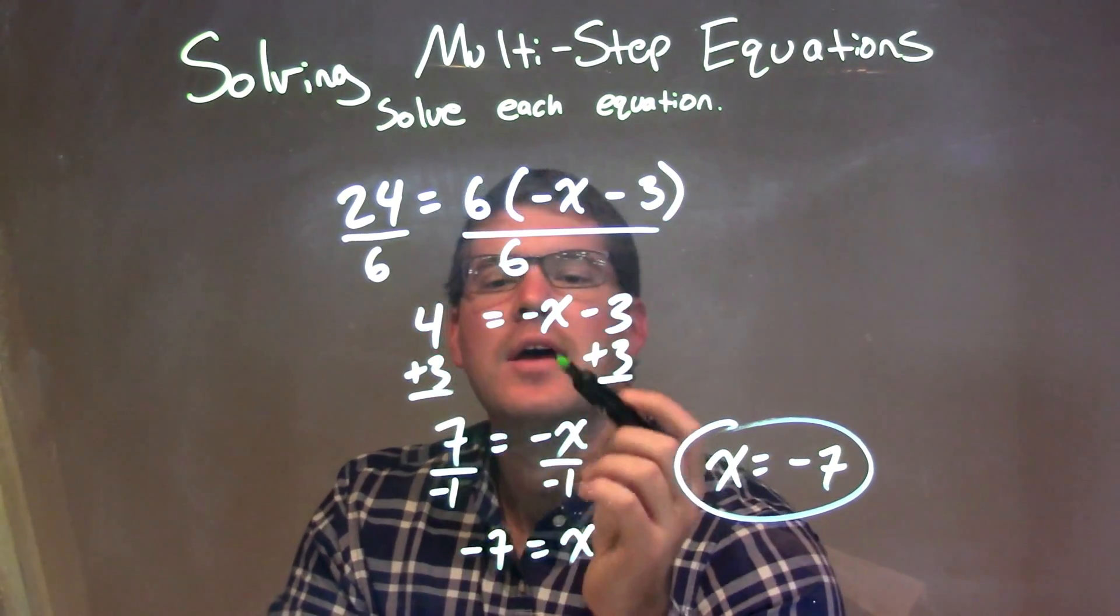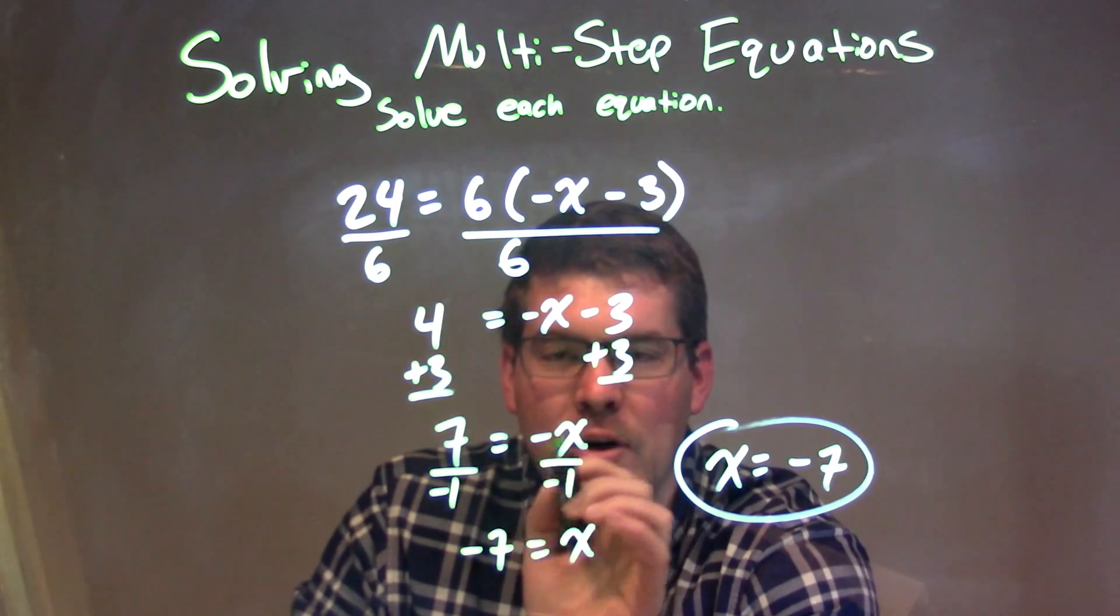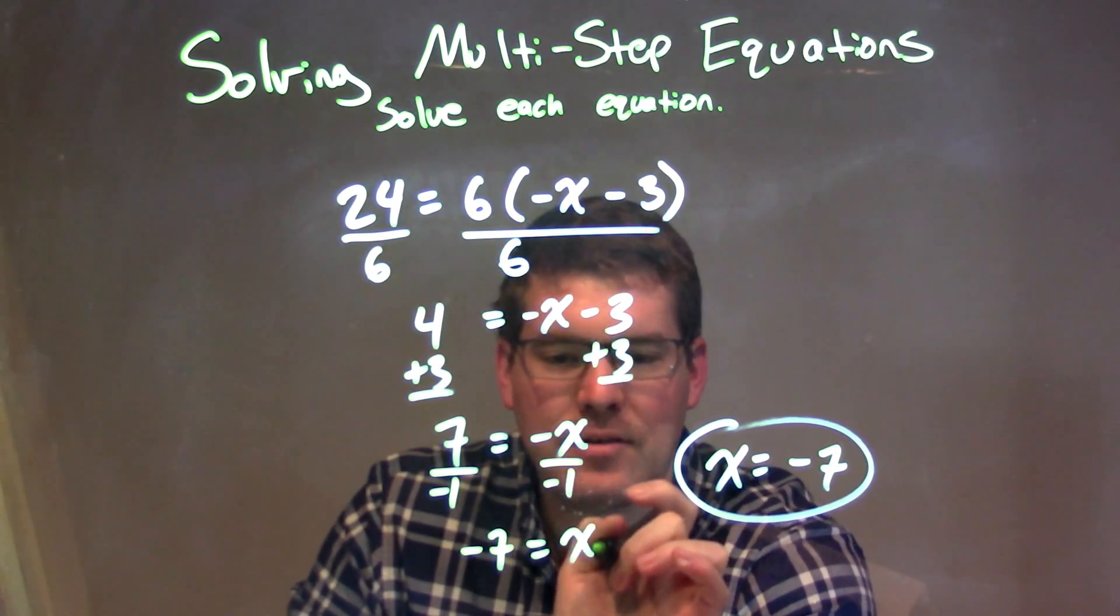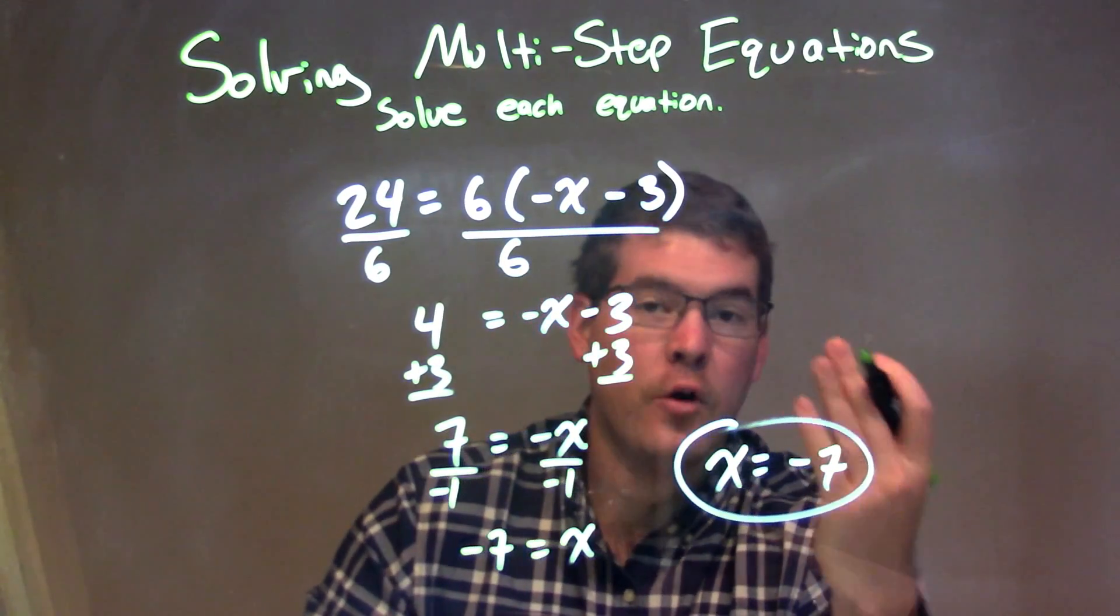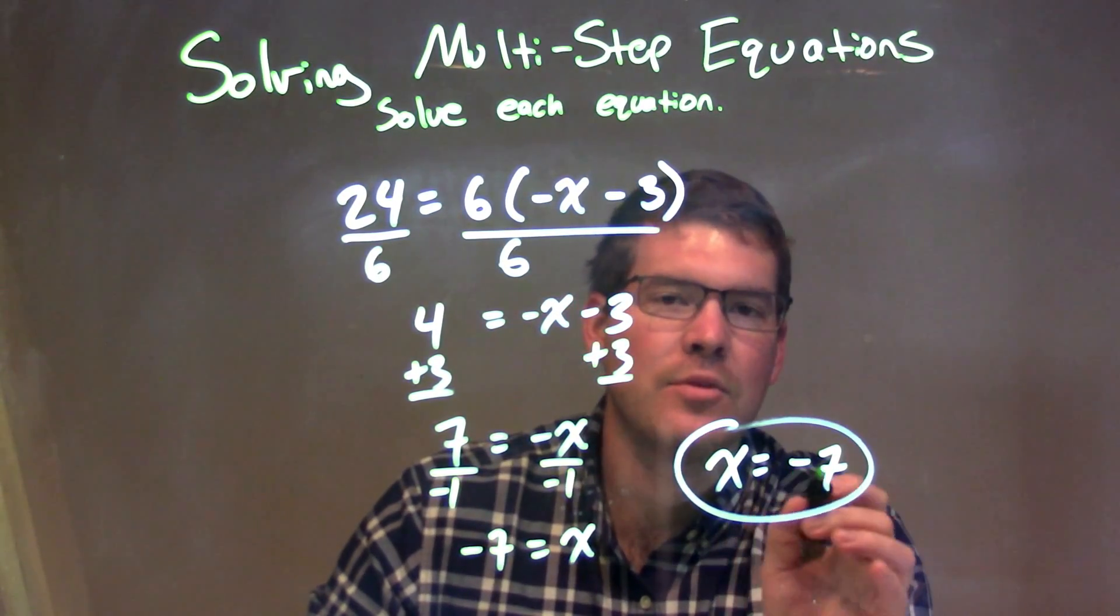I then added 3 to both sides to get 7, and then I divided by negative 1 to make x positive. In doing so, x is positive, my 7 becomes negative. We wrote that the x comes first, and so again, our final answer here is x equals negative 7.